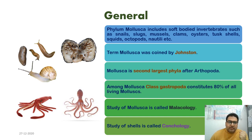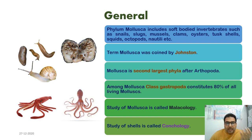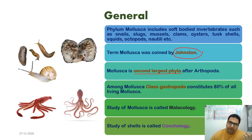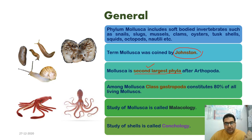The phylum Mollusca includes soft-bodied invertebrates such as snails, slugs, mussels, clams, oysters, tusk shells, squids, and octopods. The term Mollusca was coined by Johnston. Mollusca is the second largest phylum after Arthropoda. Among mollusks, the class Gastropoda constitutes about 80 percent of all living mollusks.